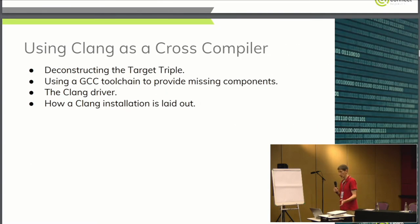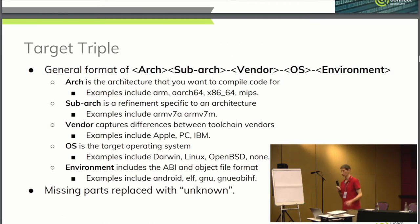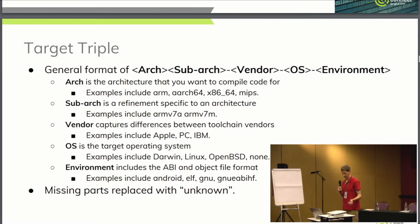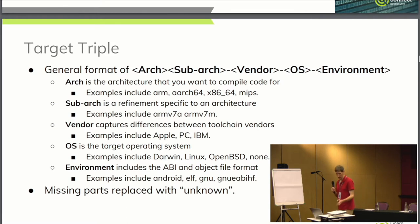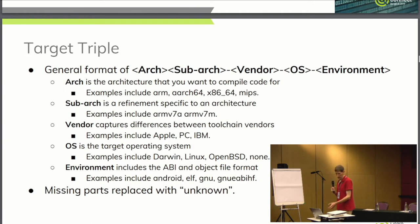Now, actually using Clang as a cross-compiler. The most important thing is the target triple. Whenever you see things like arm-none-eabi or arm-linux-gnueabihf, those break down into the format: Arch, SubArch, Vendor, OS, Environment. Not all of these have to be set — they get the value 'unknown' if you leave them out. Vendor is very often left out when compiling for Linux; proprietary users who've customized Clang may use Vendor to denote their own custom configurations.